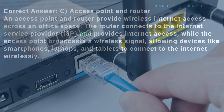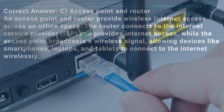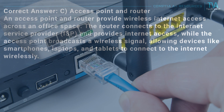Correct answer: C, access point and router. An access point and router provide wireless internet access across an office space. The router connects to the ISP and provides internet access, while the access point broadcasts a wireless signal, allowing devices like smartphones, laptops, and tablets to connect to the internet wirelessly.